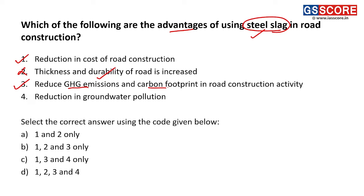Fourth statement: reduction in groundwater pollution. This is also correct because steel slag prevents seepage and leaching, which helps in reducing groundwater pollution. The second statement is incorrect. The answer is C — statements 1, 3, and 4.